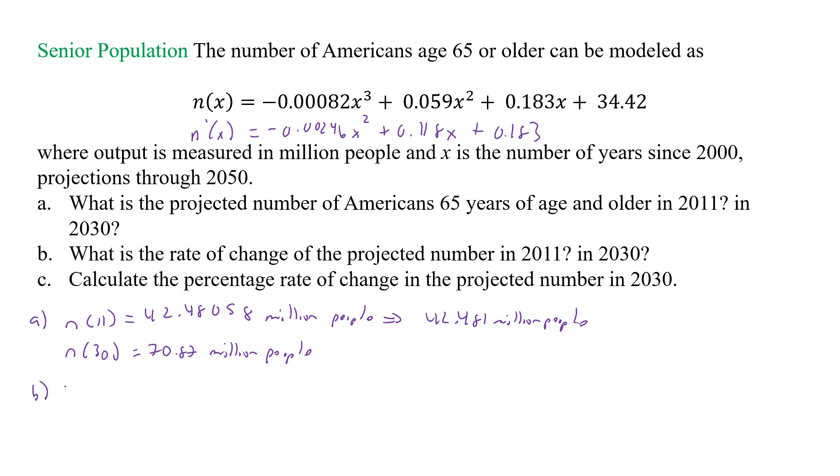And again, for b, it looks like I'm just going to have n prime of 11 and n prime of 30. So now I have to plug those values in, and so that gives me negative 0.00246 times 11 squared plus 0.118 times 11 plus 0.183, and that gives me 1.183, if I round again to three decimal places, 1.183.